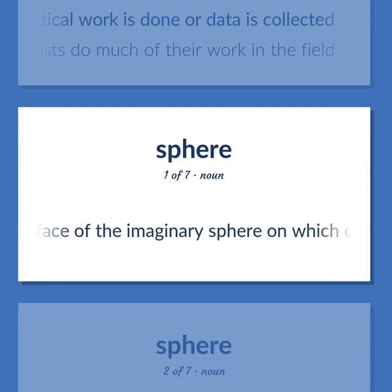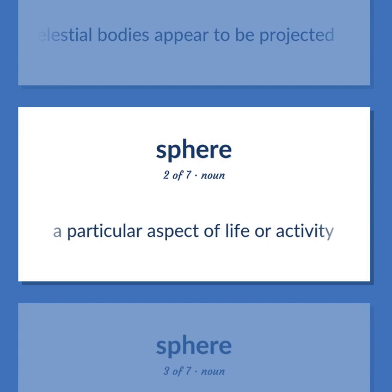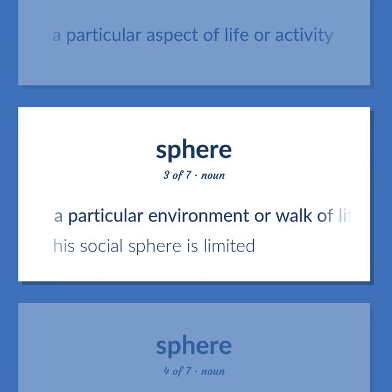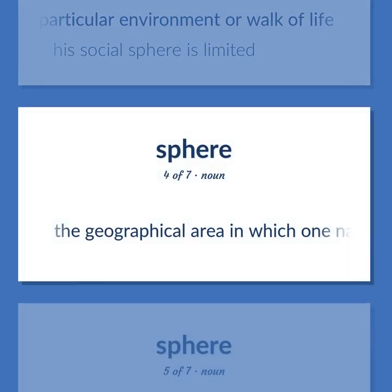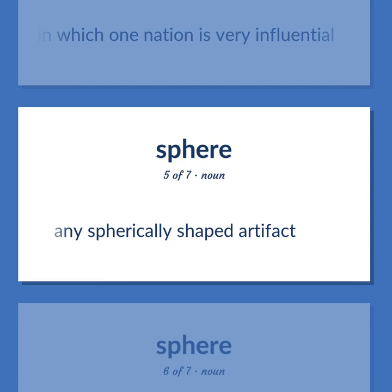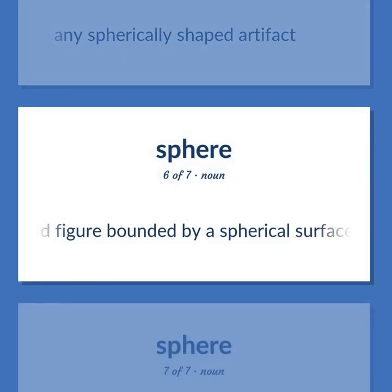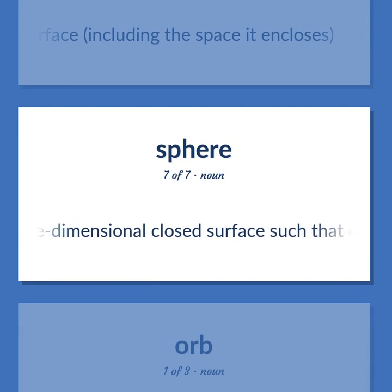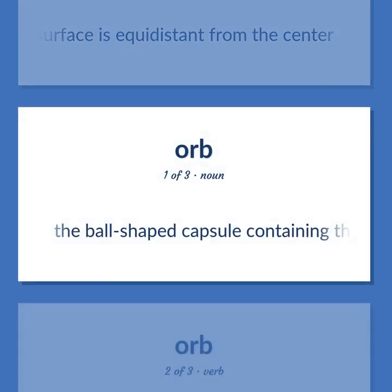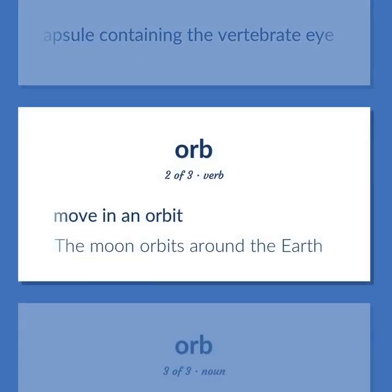Sphere: The apparent surface of the imaginary sphere on which celestial bodies appear to be projected. A particular aspect of life or activity. A particular environment or walk of life — his social sphere is limited. The geographical area in which one nation is very influential. Any spherically shaped artifact. A solid figure bounded by a spherical surface including the space it encloses. A three-dimensional closed surface such that every point is equidistant from the center. The ball-shaped capsule containing the vertebrate eye. To move in an orbit — the moon orbits around the Earth.